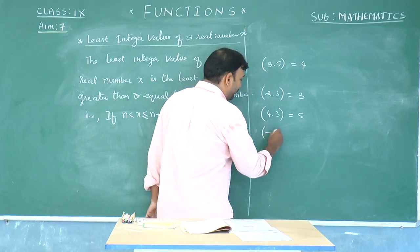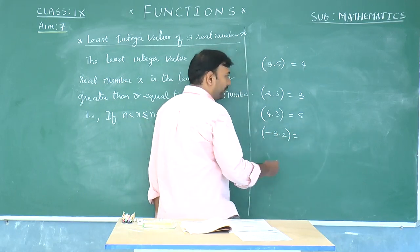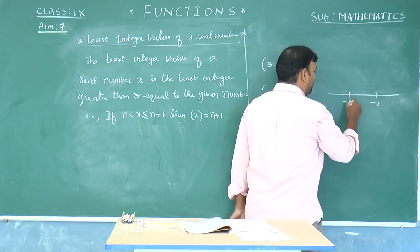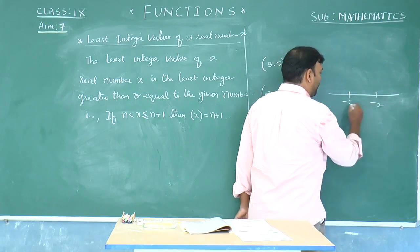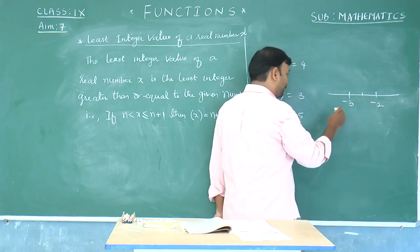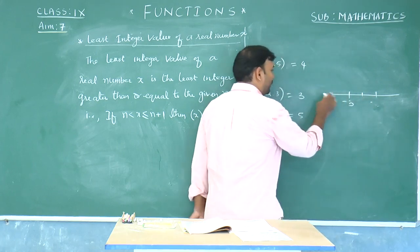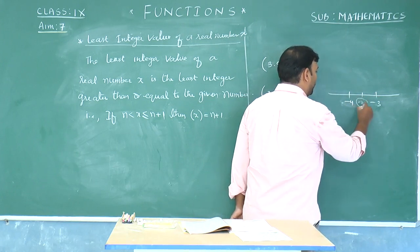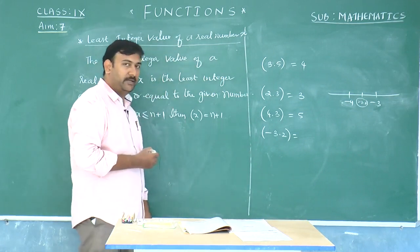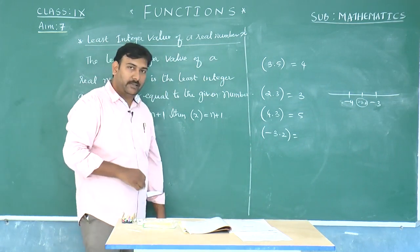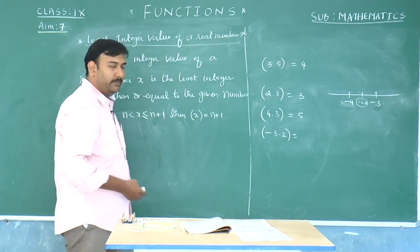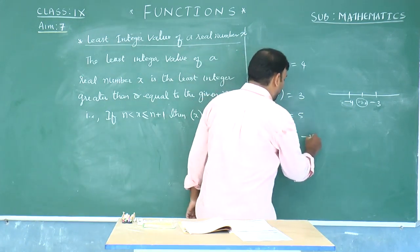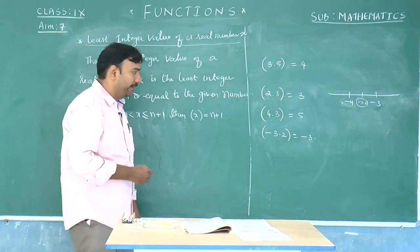If I ask you about minus 3.2, observe carefully: minus 3.2 lies between minus 3 and minus 4. You always need to write the number which is on the right side of the number line, so that is going to be the least integer of the number. You get minus 3. So in this case, minus 3.2 gives you minus 3.